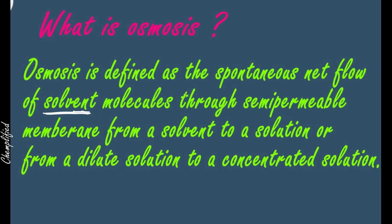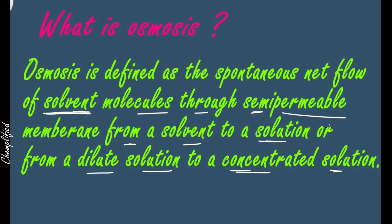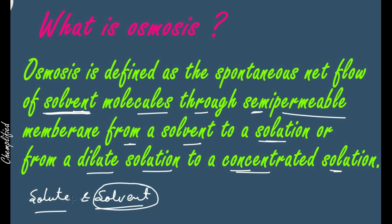Osmosis is defined as a spontaneous net flow of solvent molecules through a semi-permeable membrane from a solvent to a solution, or from a dilute solution to a concentrated solution. A semi-permeable membrane is one that allows only one type of particle to move through it — specifically, only the solvent particles — and this process is defined as osmosis.